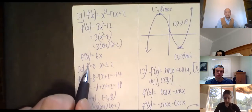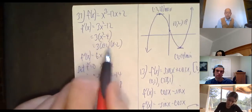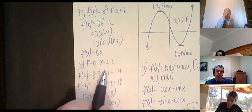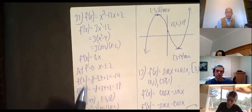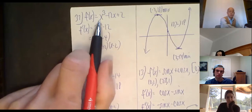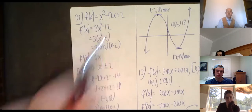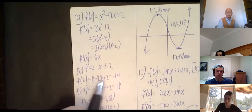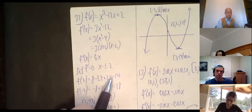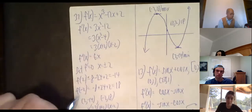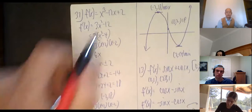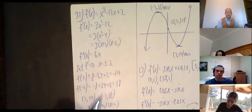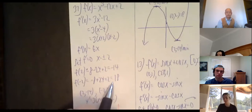Set f′ equal to zero: x = ±2. To plot these points, we need the y-coordinates. Plug in x = 2: 2³ - 12(2) + 2 = 8 - 24 + 2 = -14. Plug in x = -2: (-2)³ - 12(-2) + 2 = -8 + 24 + 2 = 18.